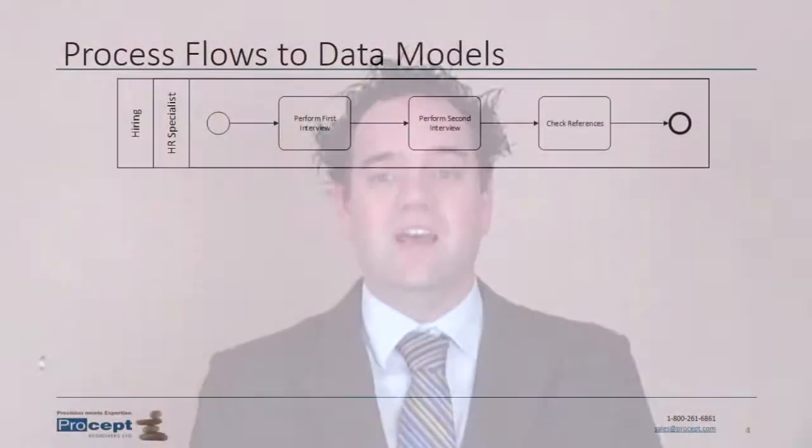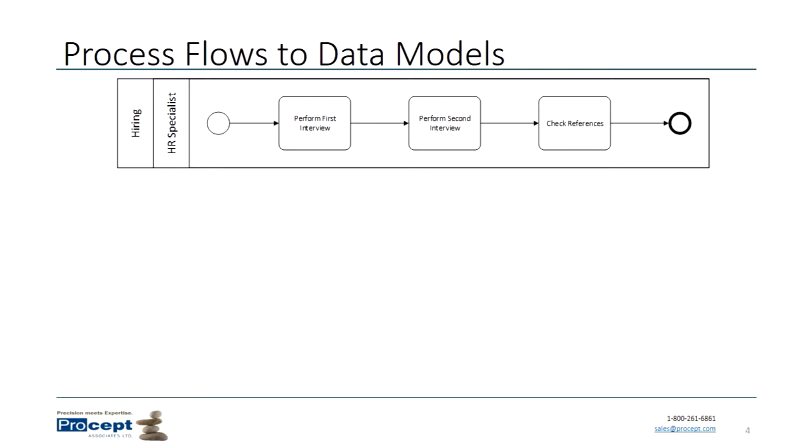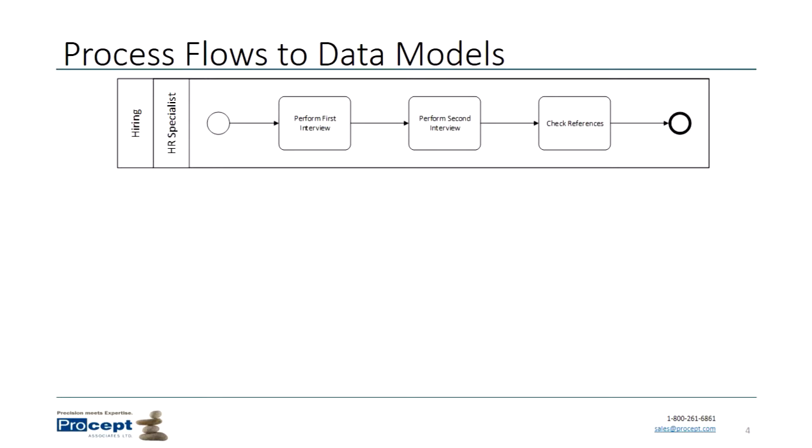The next thing I want to talk about is how data models relate to other models you might have created as part of your solution. The first example is how a data model might relate to a process diagram. We have a very simple process diagram here in BPMN notation with three steps. Oftentimes there's a transactional data entity following through that process — every time we take a step, the state or status of that data entity might change.